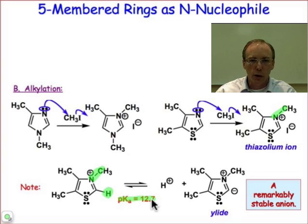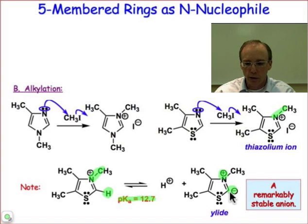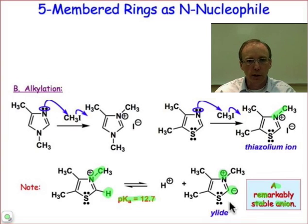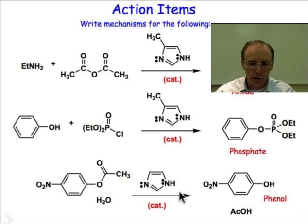Deprotonation, under conditions where there's a strong enough base around, makes what's known as this ylid. A ylid has both positive and negative charges in it. That carbon atom, as you might expect, is quite nucleophilic. It's a remarkably stable anion for a biological system — considering that it's a carbon anion, that's what's so surprising about it. That's just a mode of reactivity in which this type of N2 non-bonding pair of electrons gets involved through an alkylation reaction.